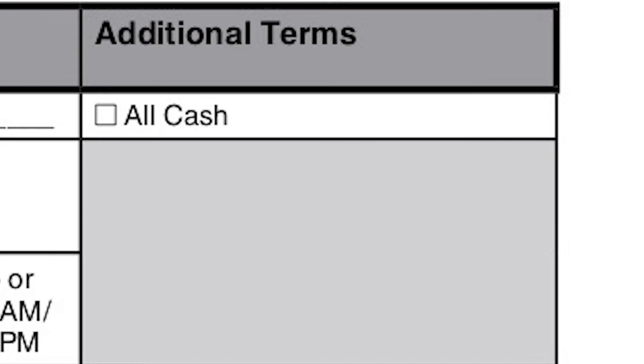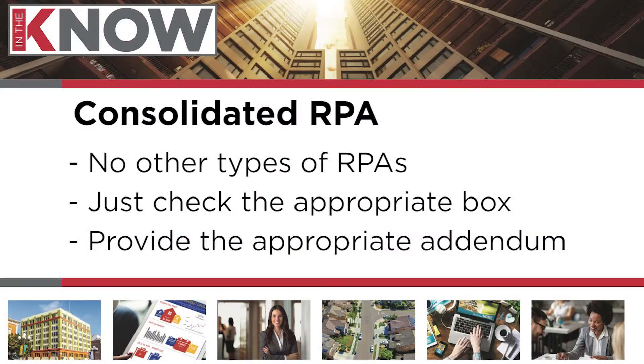You can now manually check and uncheck included and excluded items from the transaction. You also have a consolidated RPA, so there's no longer a need for different types of RPAs. You'll just check the appropriate box and provide the appropriate addendum for your transaction. You also have individual statutory document paragraphs, so there's no longer a general paragraph for statutory documents.